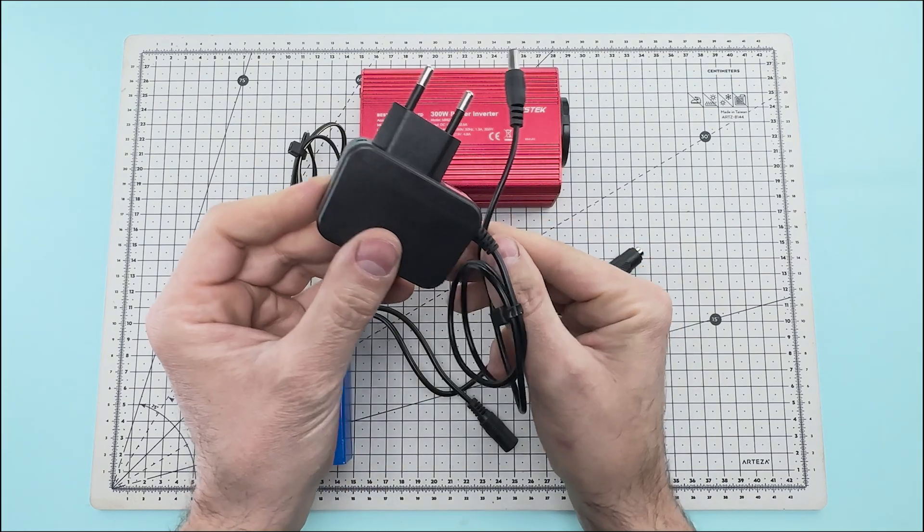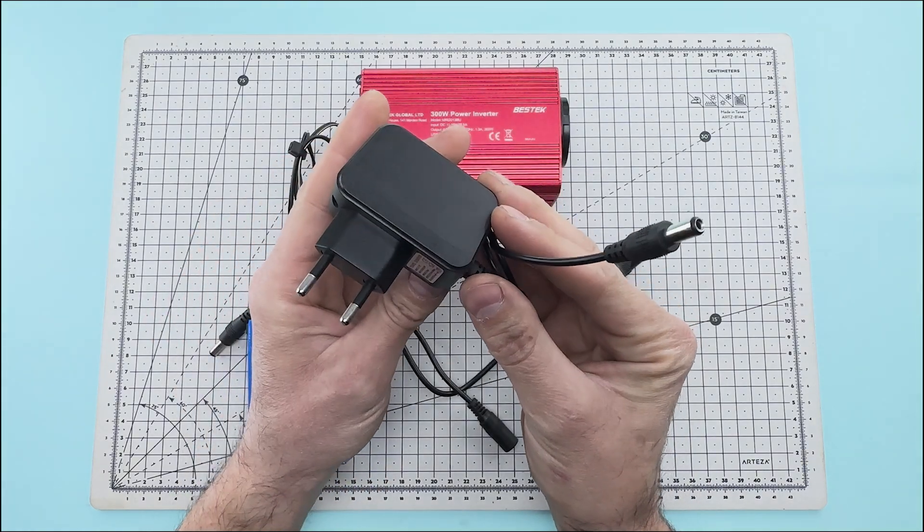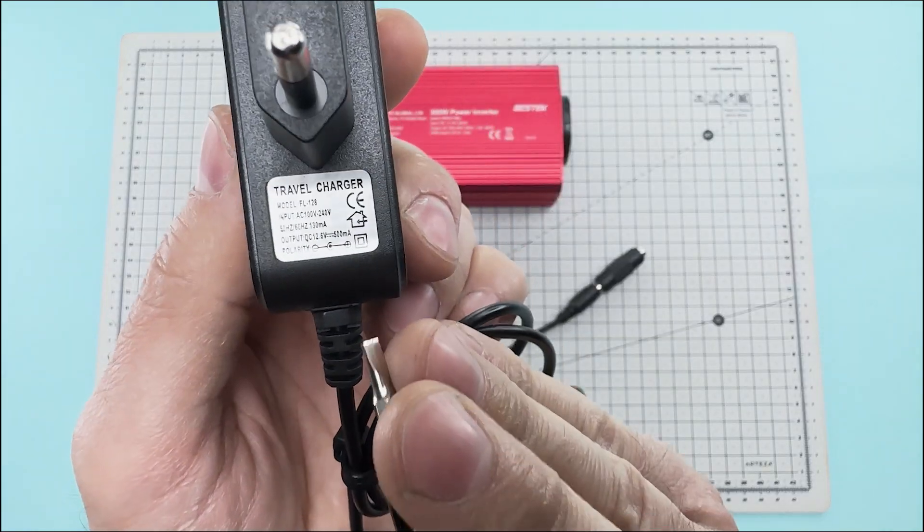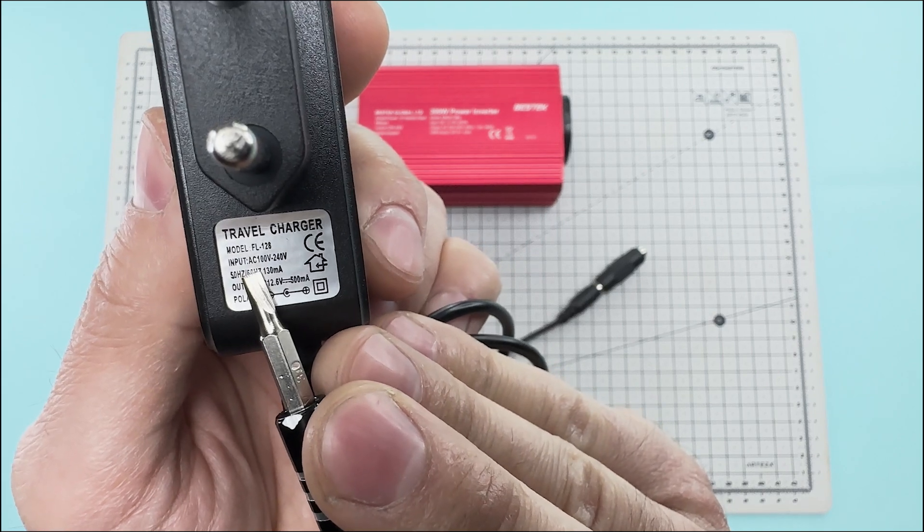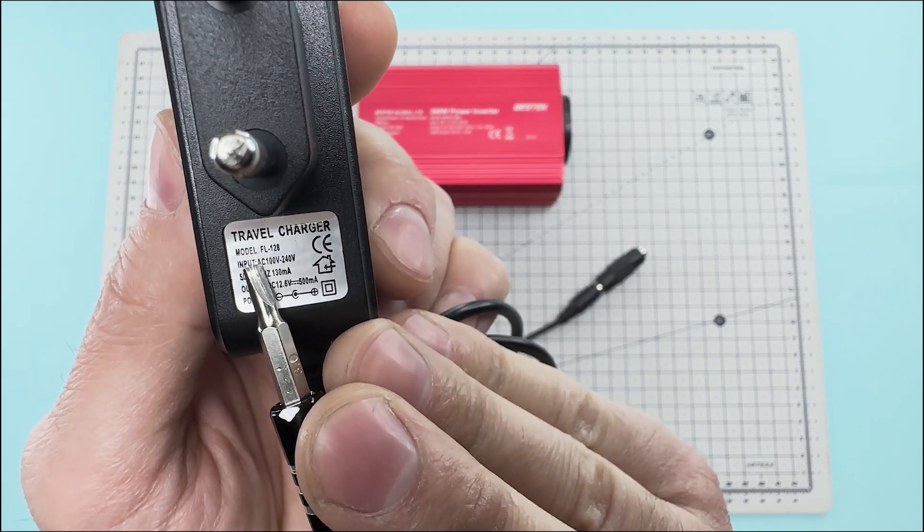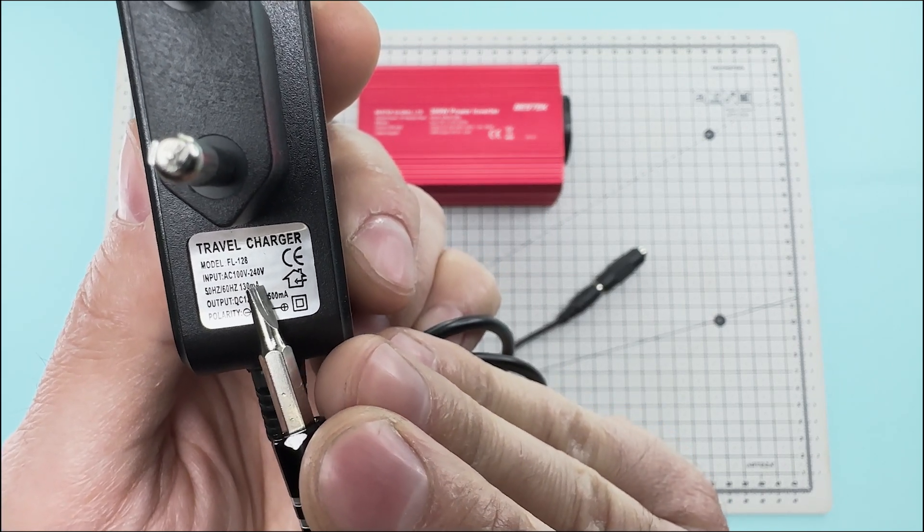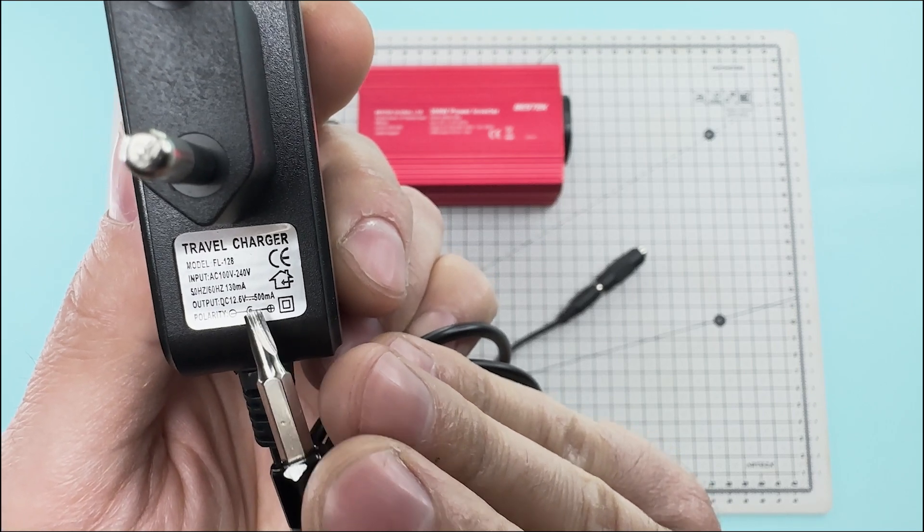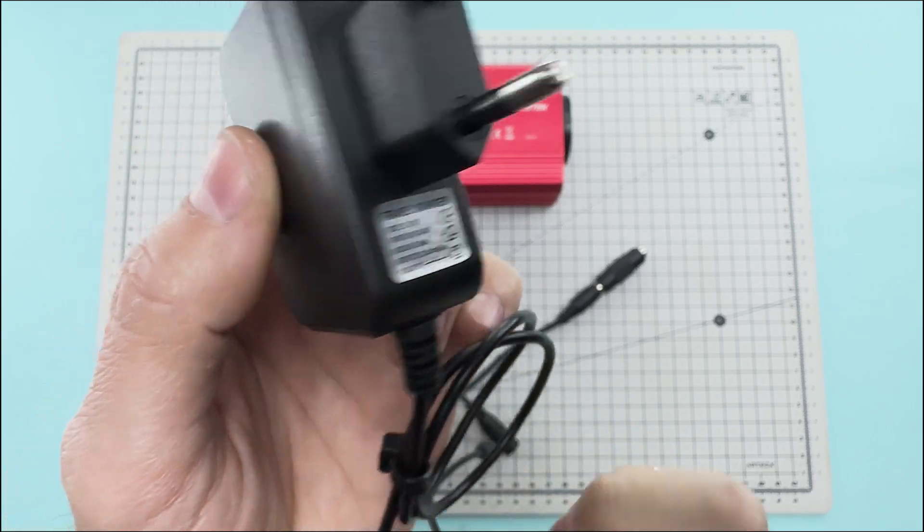This is the power supply we will use to charge the battery. This power supply operates at 220 volts of alternating current and a frequency of 50 hertz. And it has an output connector that provides a direct current of 12 volts.